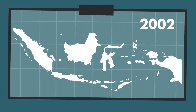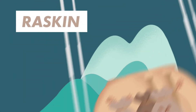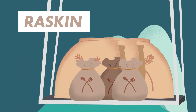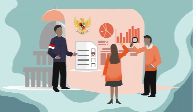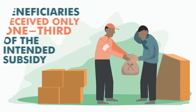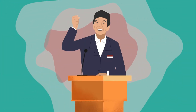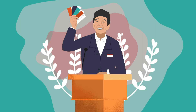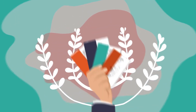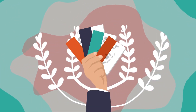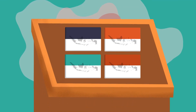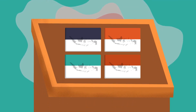In 2002, Indonesia launched a national rice subsidy program known as Raskin, or Rice for the Poor. Researchers working with the government found that beneficiaries received only one-third of the intended subsidy. The government thought that providing participants with identification cards printed with information about their entitled benefits could empower households to request their full benefits.